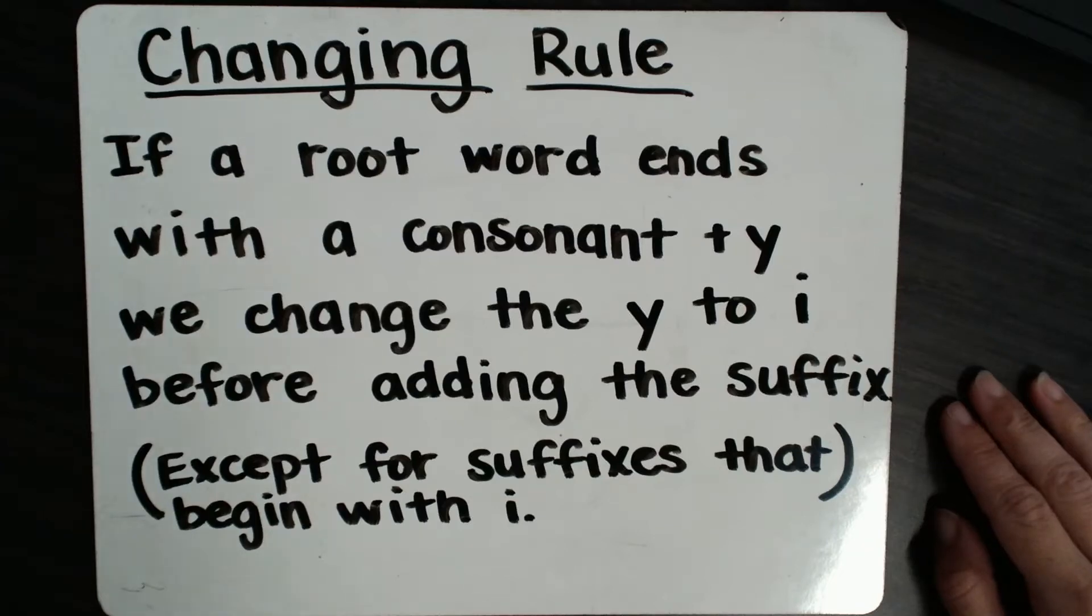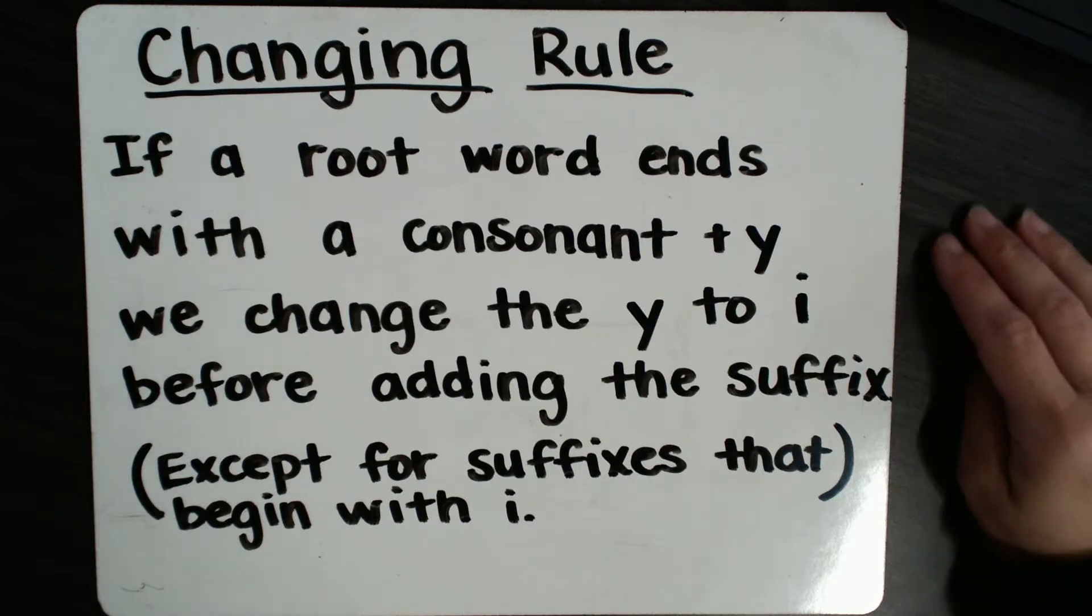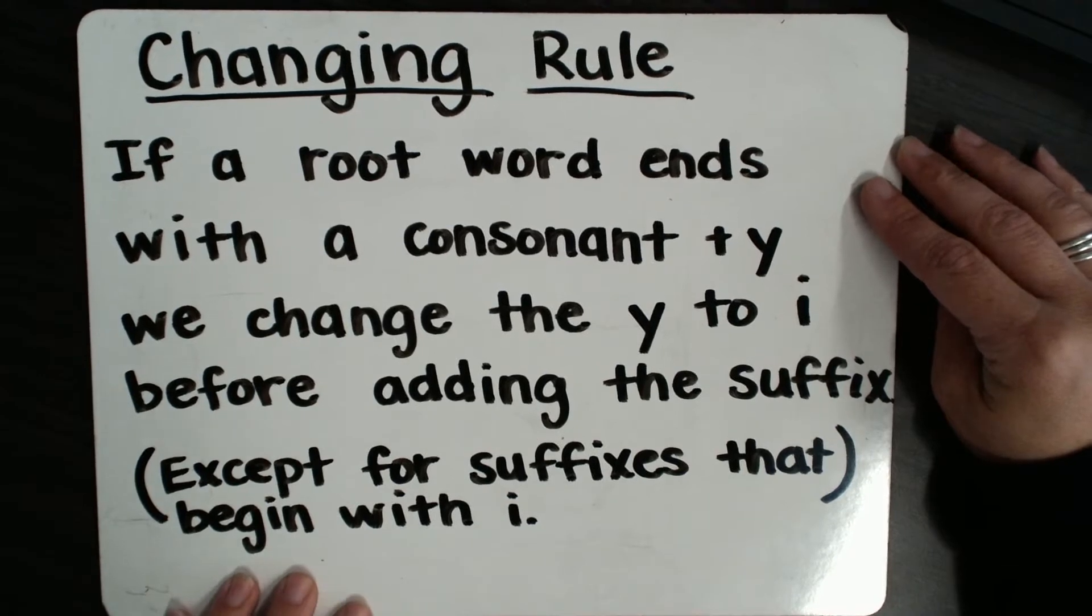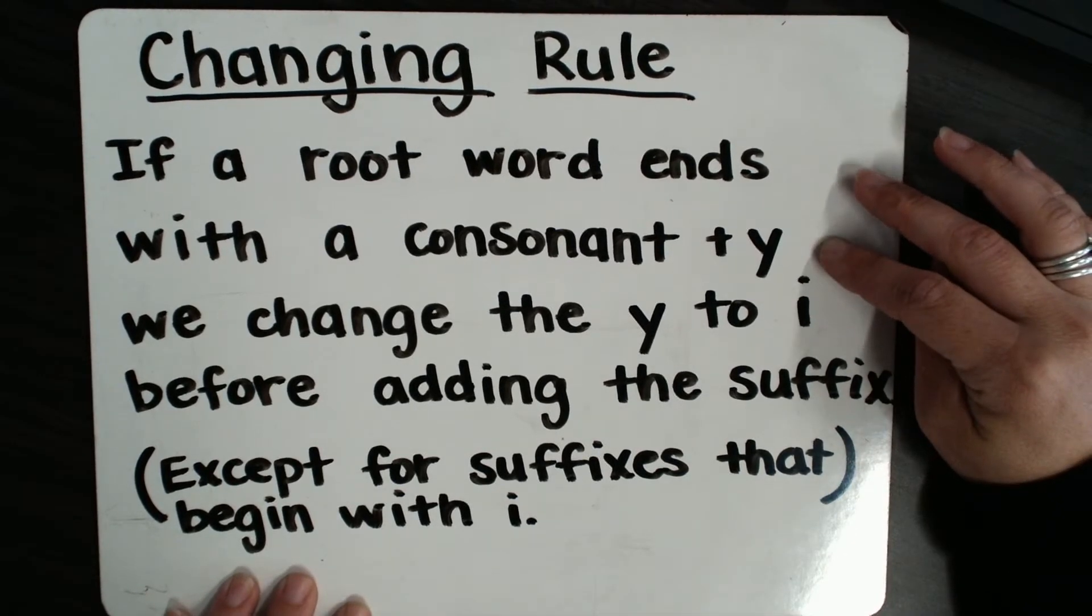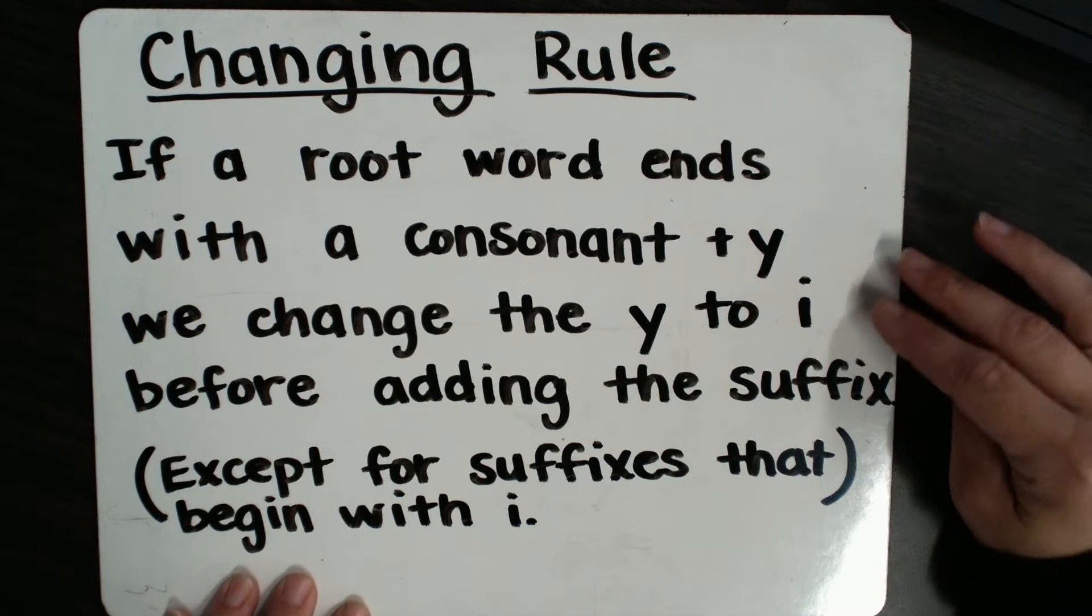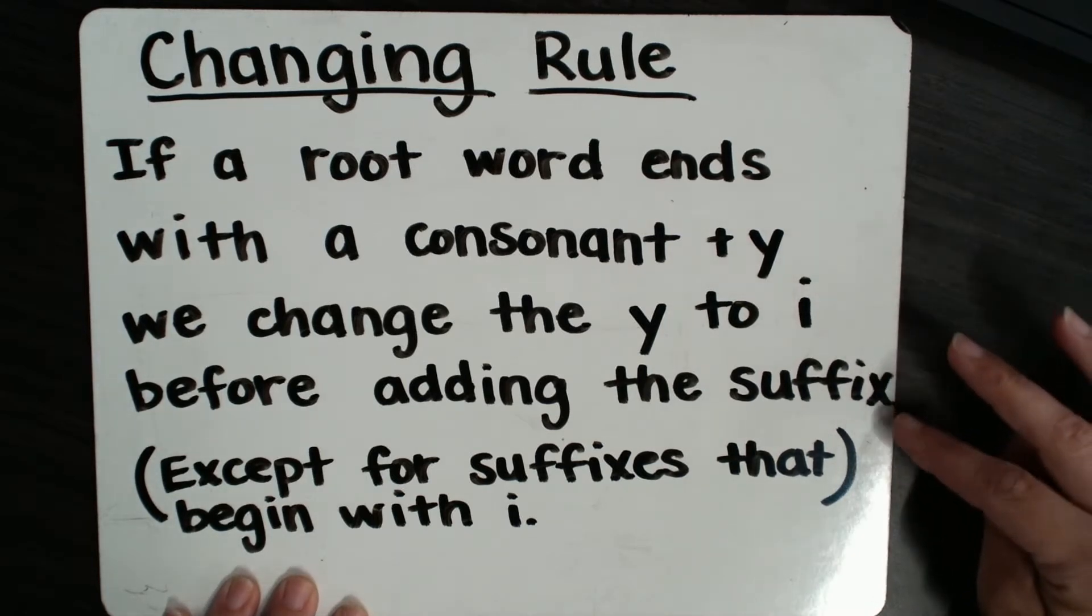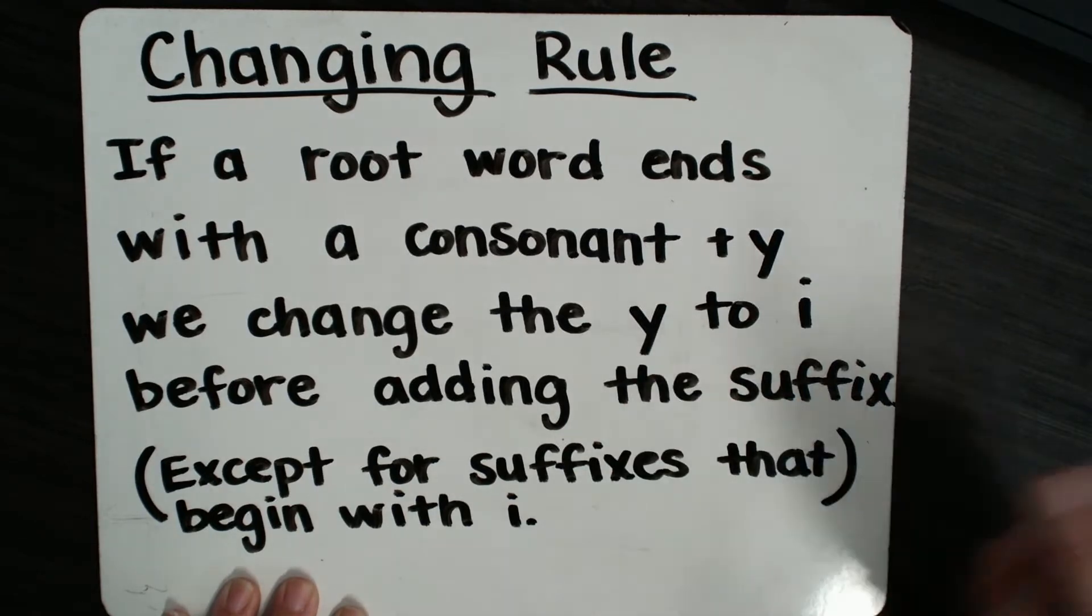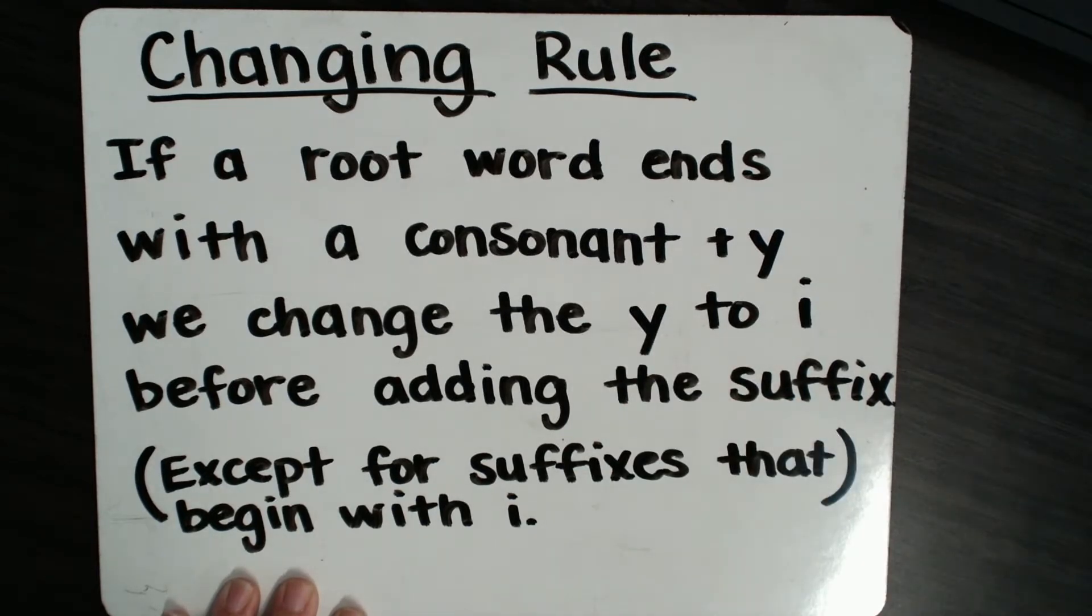Okay, today is our final rule for adding suffixes, and it is our changing rule. The changing rule says if a root word ends with a consonant plus y, we change the y to i before adding the suffix, except for suffixes that begin with i, like ing. So let's look at some words where this would be true.